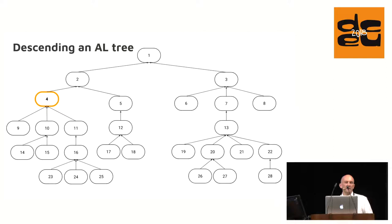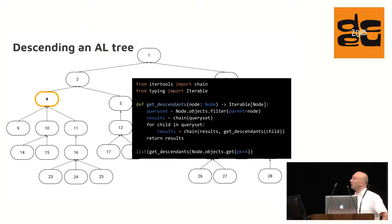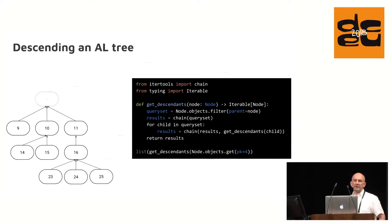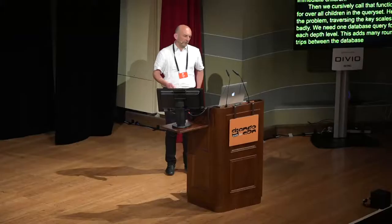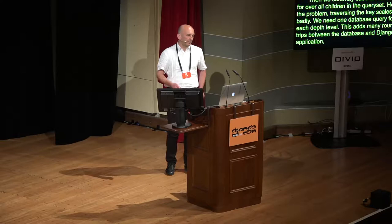A common use case is to find all nodes below a given node. In this example we look for the descendants of the highlighted node. A Python function to get its descendants might be implemented such as this. First, we create a query set for all immediate children. Then we recursively call that function for all children in that query set. Here, the problem is that traversing the tree scales really badly. We need one database query for each depth level. This adds many round trips between the database and our Django application. And we get an iterator instead of a query set, losing all the useful methods on that class.